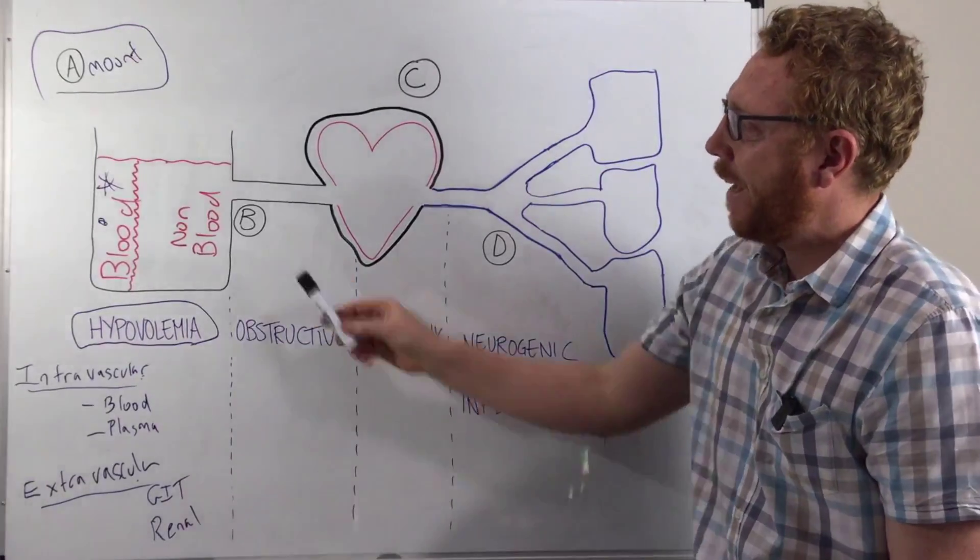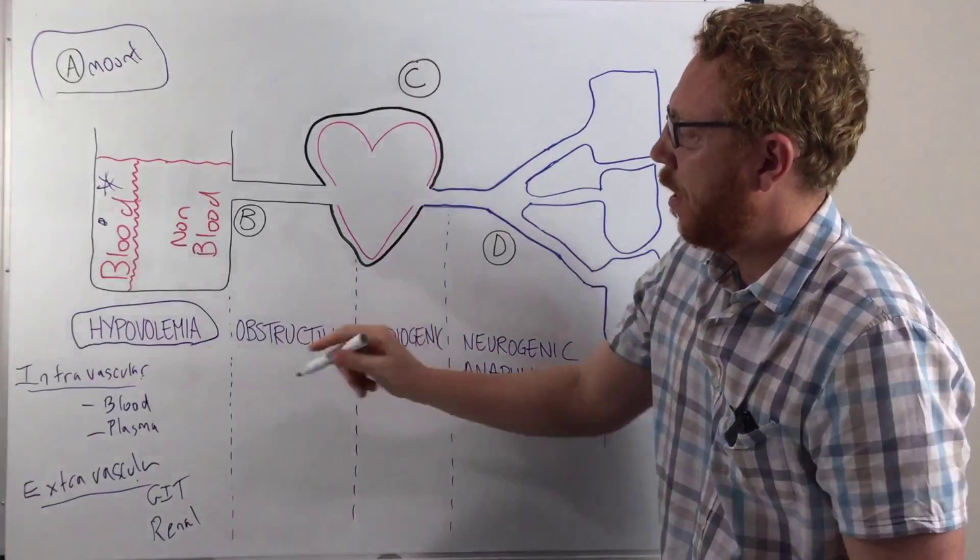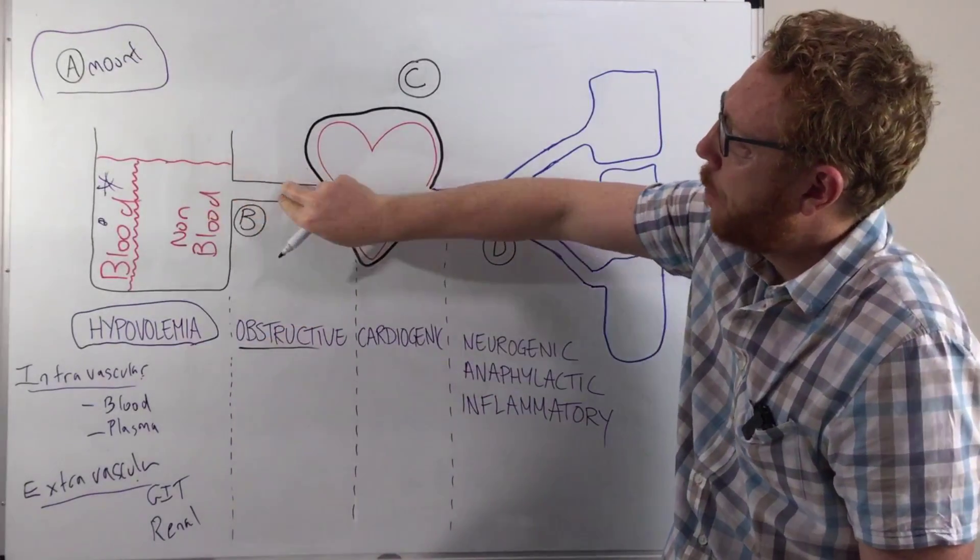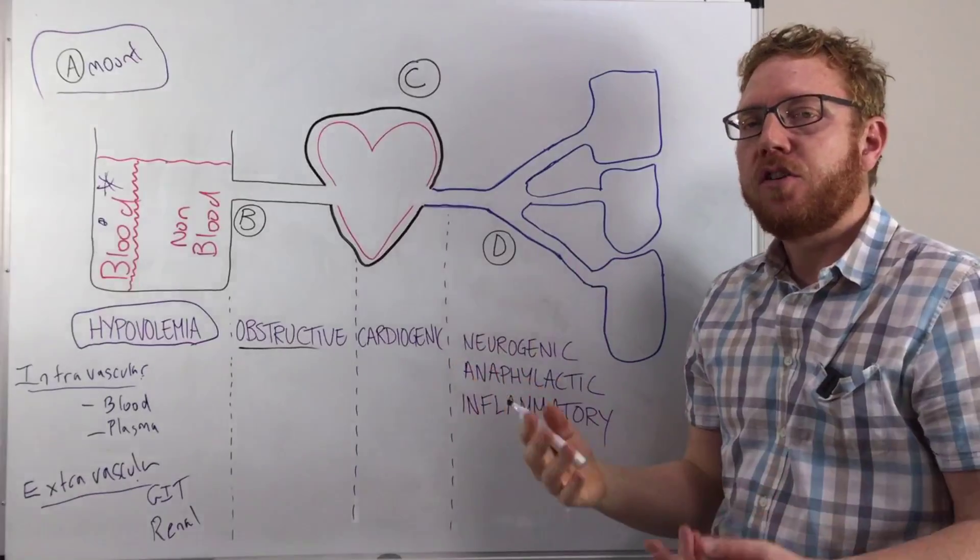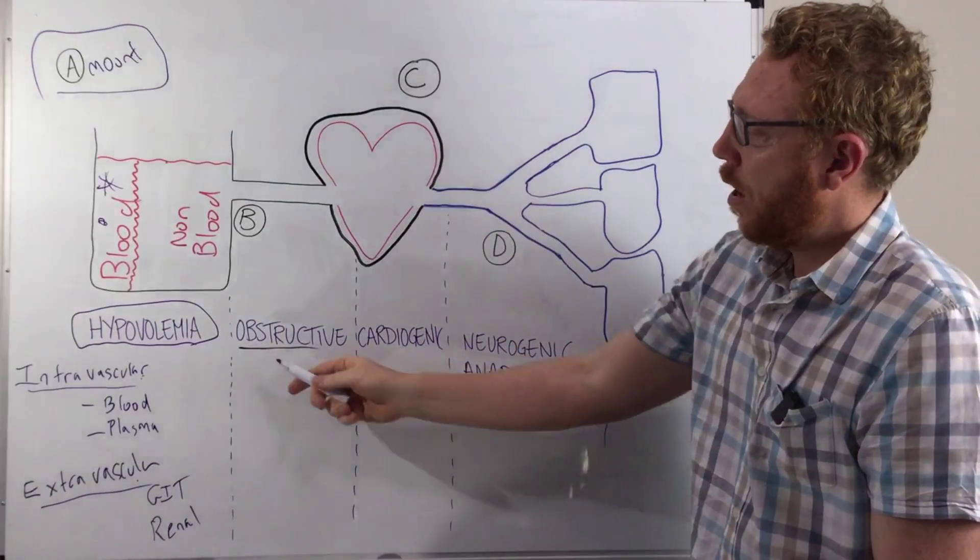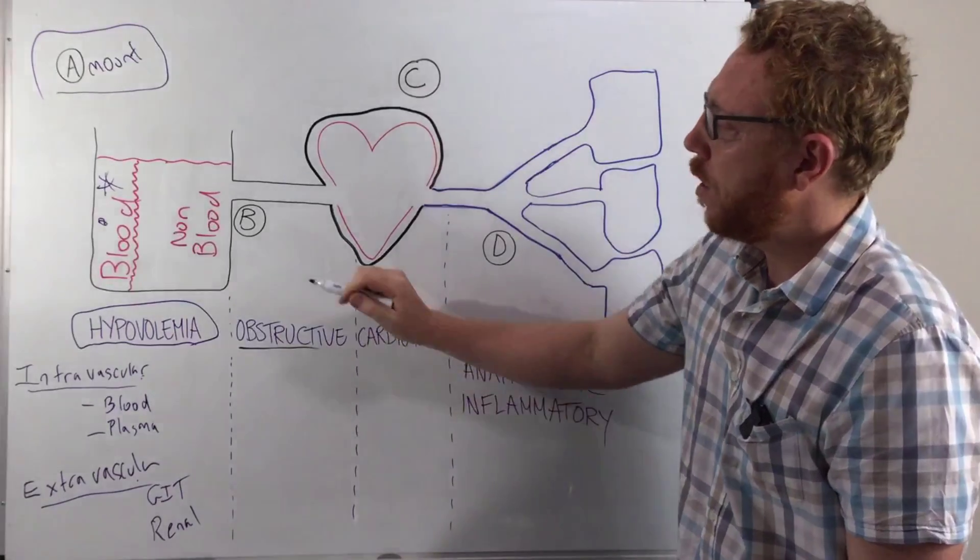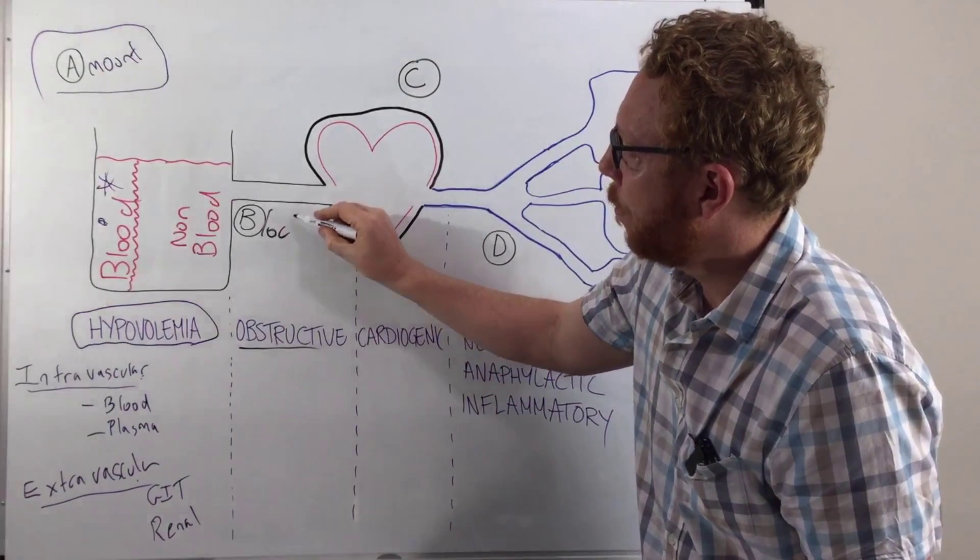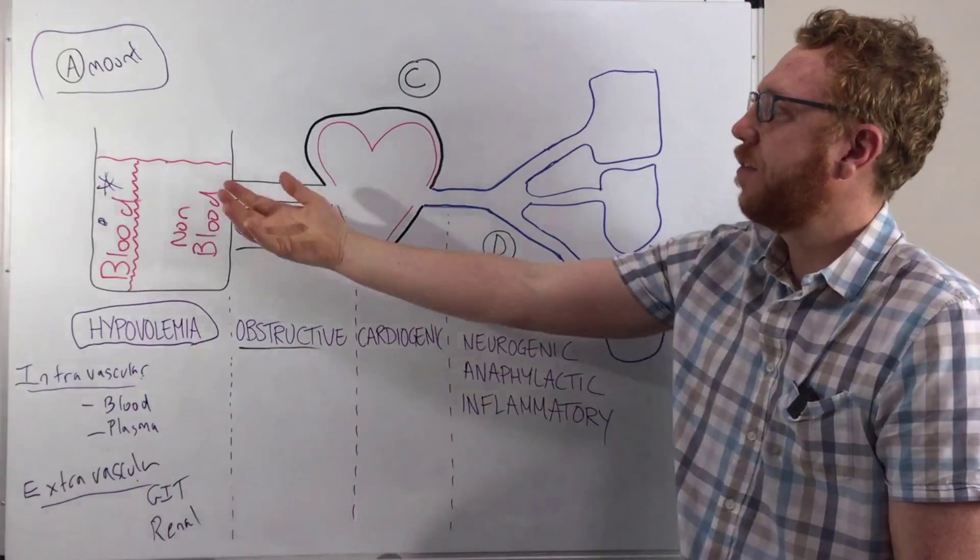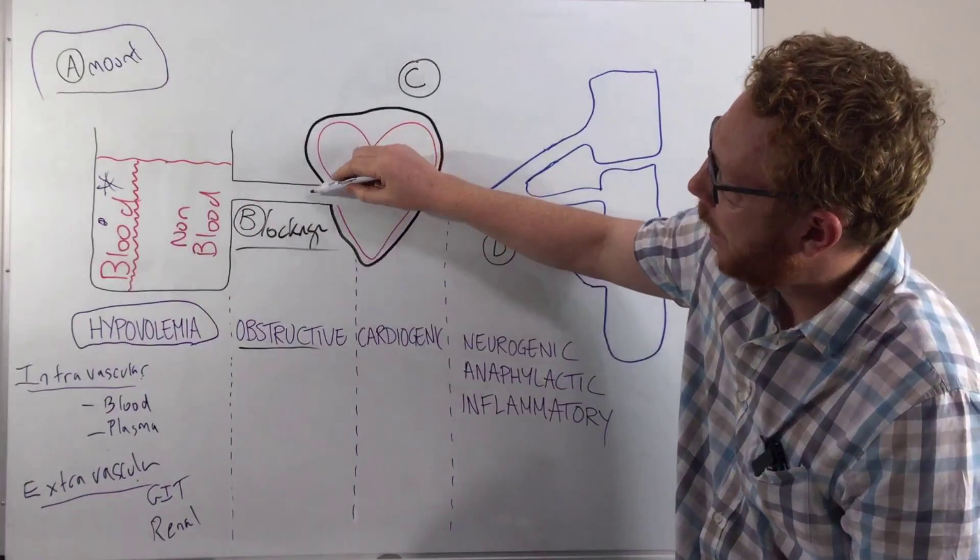Moving on to B, and this is the obstructives. So what's happening here is essentially the way the blood is going back to the heart, there is a blockage. So the heart isn't getting loaded with blood. So obstructive causes, or you might want to say blockage. So B for blockage. Pretty easy. So what could block the flow back to the heart?